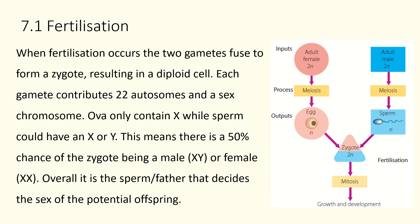Eggs can only contribute X chromosomes, while sperm can contribute either X or Y — so sperm determines biological sex. There's a 50/50 chance every single time for the resulting zygote to be male or female, no exceptions. Claims that certain behaviors or circumstances influence the sex of a child are not real; it's entirely random, 50% chance every time.